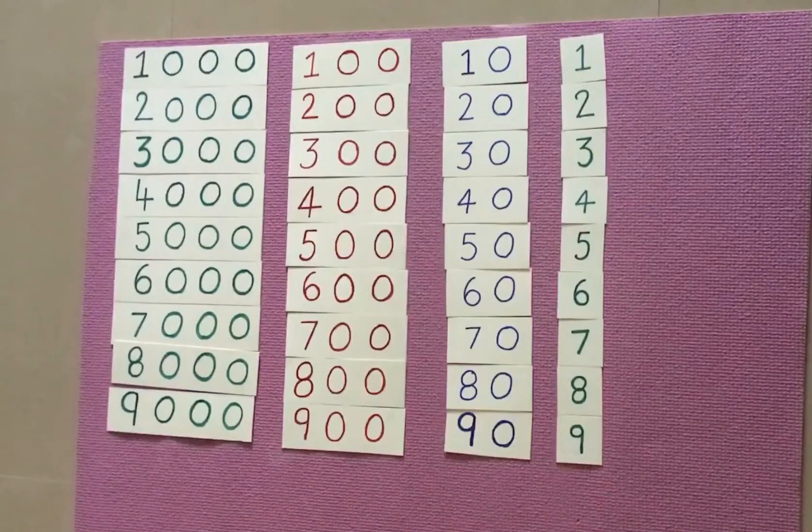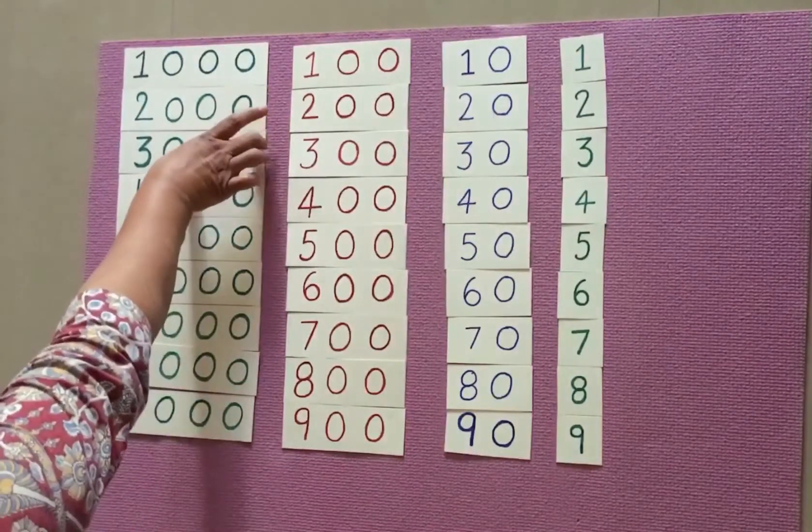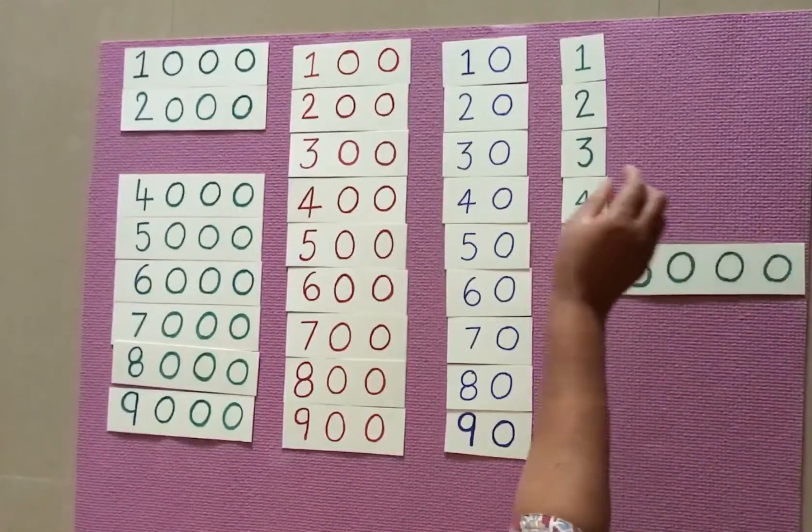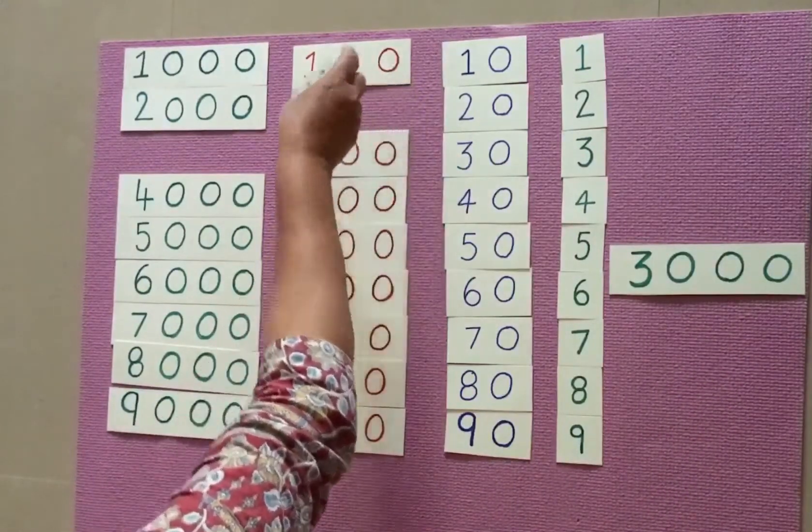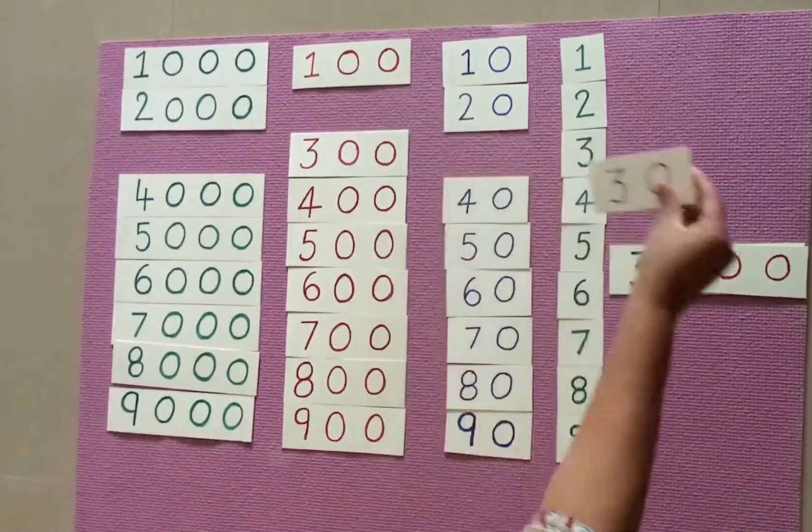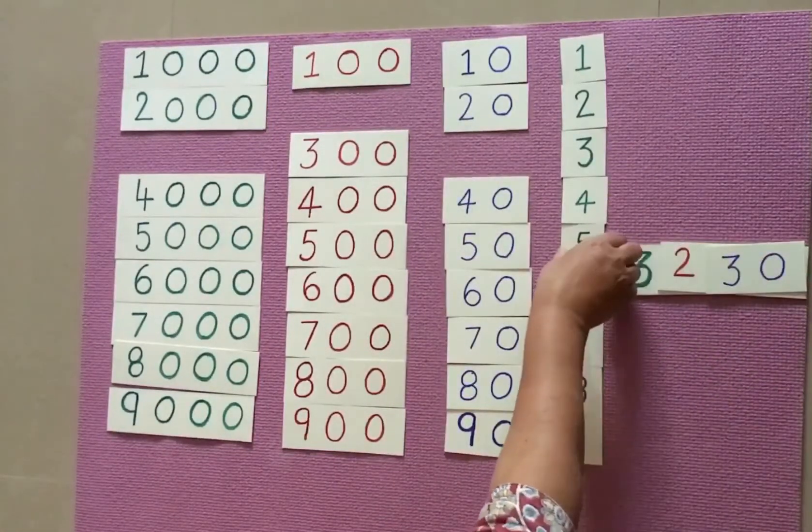Child may bring the card material. 3 thousand, 2 hundreds, 3 tens, and 5 ones.